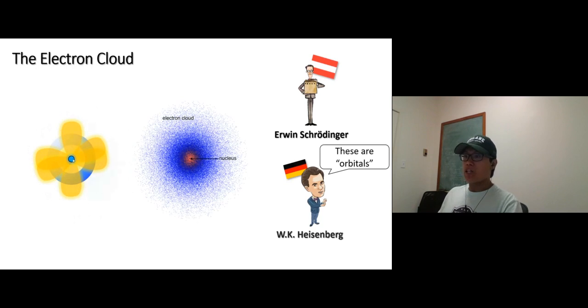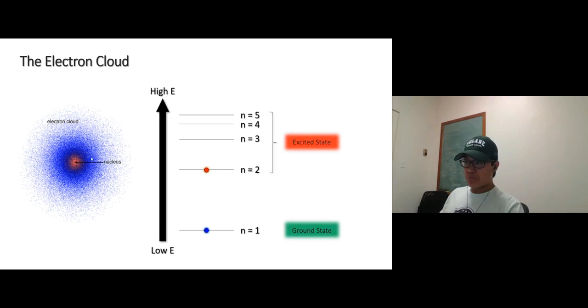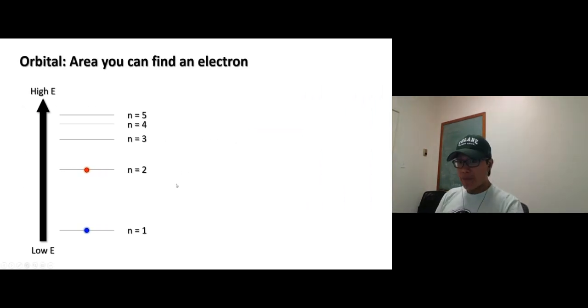There are energy levels: level one, two, three, four, five. The electron at energy level one we still call the ground state. Energy levels two, three, four, five are the excited states. Now start with energy level one.